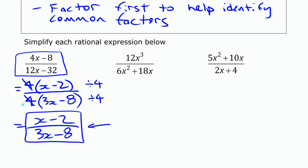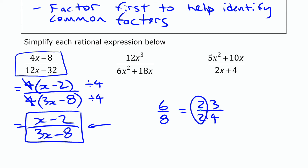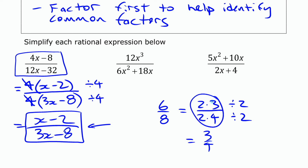It's just like simplifying the fraction 6/8: you write it as (2 times 3) over (2 times 4). They have a common factor of 2, so you divide the top and bottom by 2 and end up with just 3/4. When you write things in factored form, the advantage is you can just cross out what's in common.